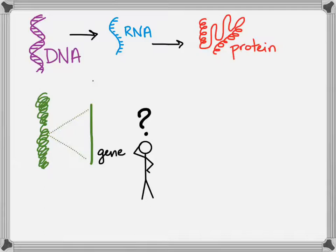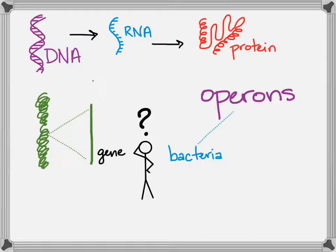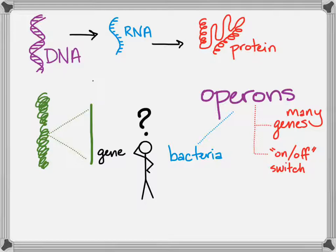The way prokaryotes handle that is using something called an operon. This is only in bacteria, and we're looking at many genes. One operon is in charge of many genes at a time — they act as on-off switches to turn on all of those genes or turn all the genes off at the same time.